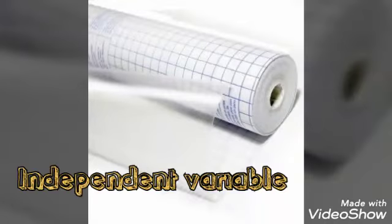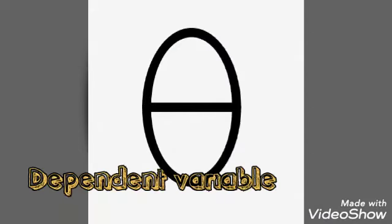Now, for the independent variable, it is the material that each team chooses to do their experiment, and theoretically, the coefficient of friction. And for the dependent variable, it is the angle of displacement along with the time it takes to slide.